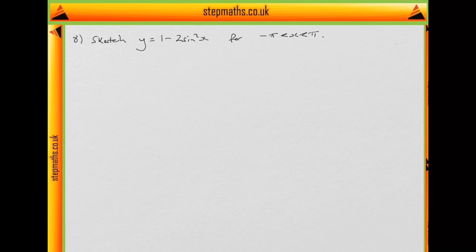There's a very easy trick for this problem that will simplify the question massively, and that's knowing your trigonometric identities. If you know your trigonometric identities, you will know that 1 minus 2 sine squared of x is in fact equal to cosine of 2x. So in fact, what the question is asking us is to sketch the curve of y equals cos 2x.